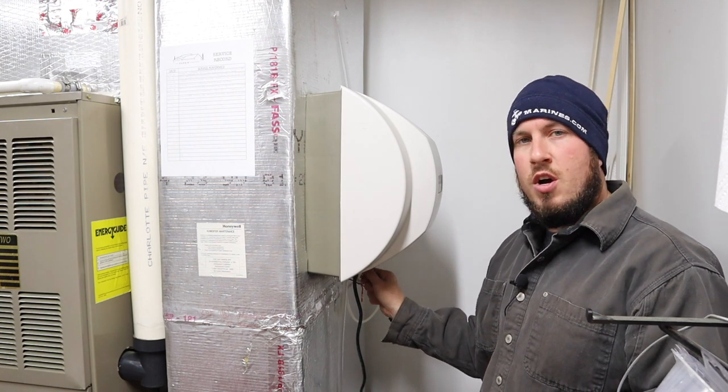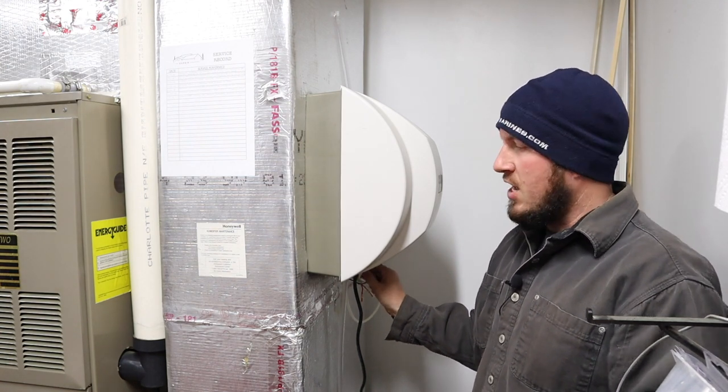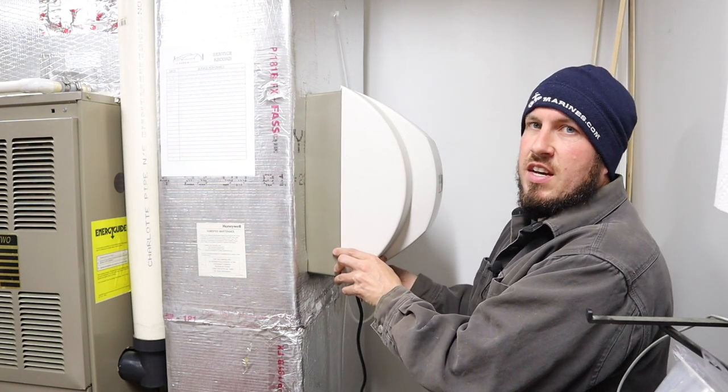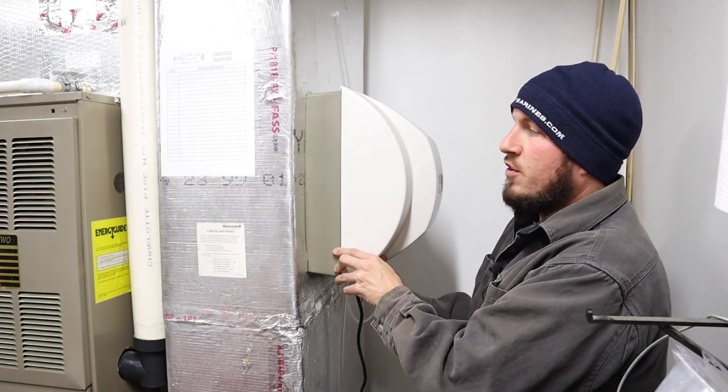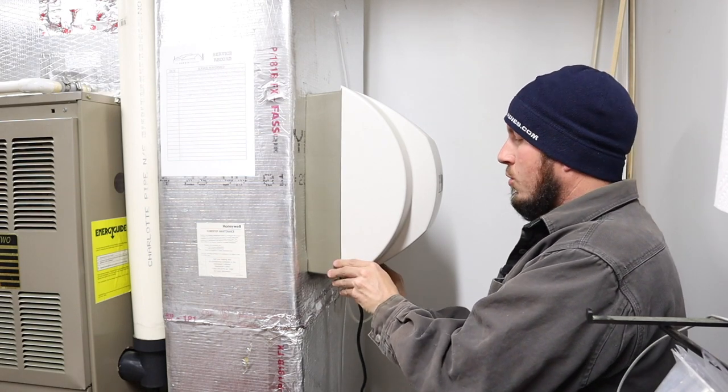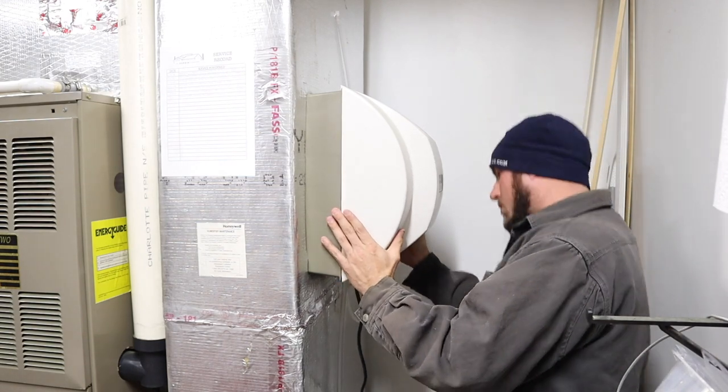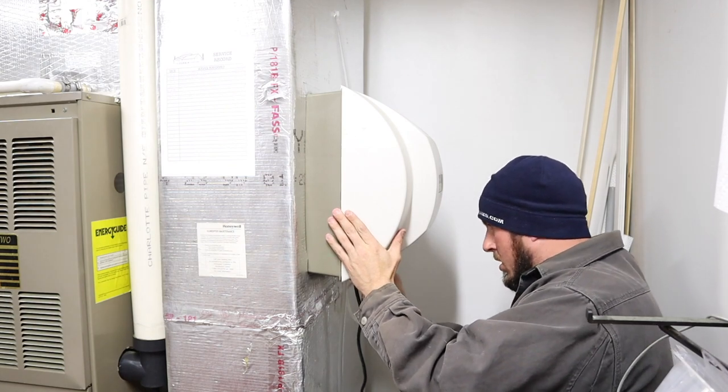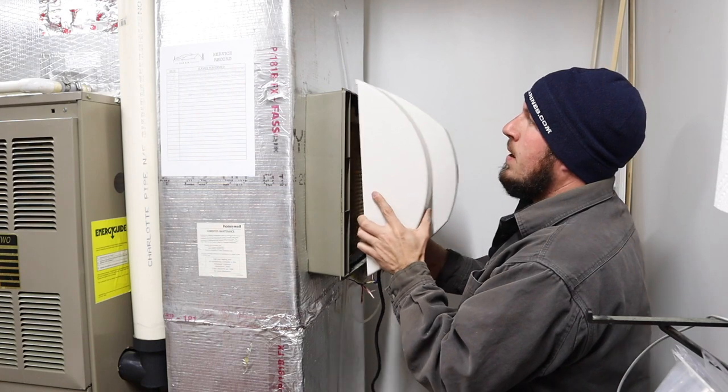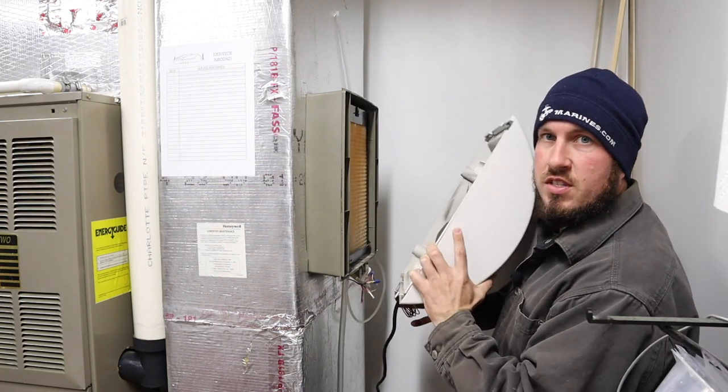You have a little thumb screw on the bottom of your humidifier and you literally just loosen it off. And what it does is secure the cover to the front of it. So once you've got your thumb screw all the way unscrewed, you literally just need to pull up on your cover and unseat it here and pull it off. So it's as simple as that.